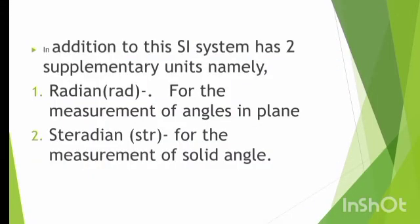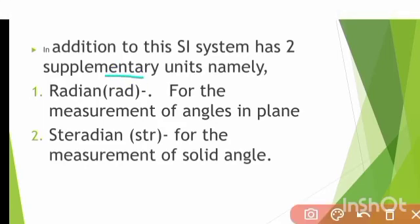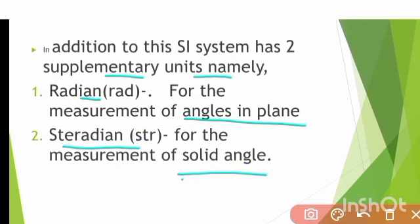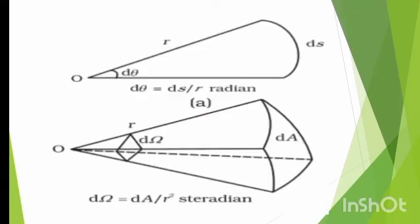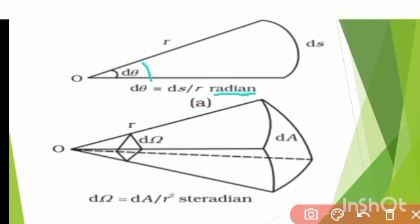In addition to these, the SI system has two supplementary units: radian, which is used for the measurement of angles in a plane, and steradian, which is used for the measurement of solid angles.